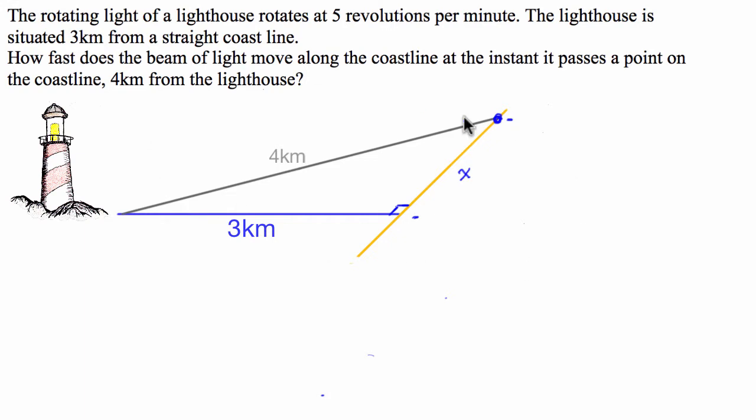Now, if we're asked to find the speed at which x is changing, what we're going to use is the relationship dx, the change in x, over the change in time. So it is this value here that the question is asking us to find.